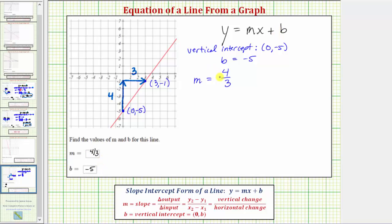But before we write our equation, let's also show how to find the slope in a different way using this formula. We can also say the slope equals the change in output divided by the change in input. And if the y variable is the output variable and the x variable is the input variable, we can say the slope equals the change of y divided by the change of x. The change of y would be the difference of the y-coordinates of two points on the line, and the change of x would be the difference in the x-coordinates of two points on the line.